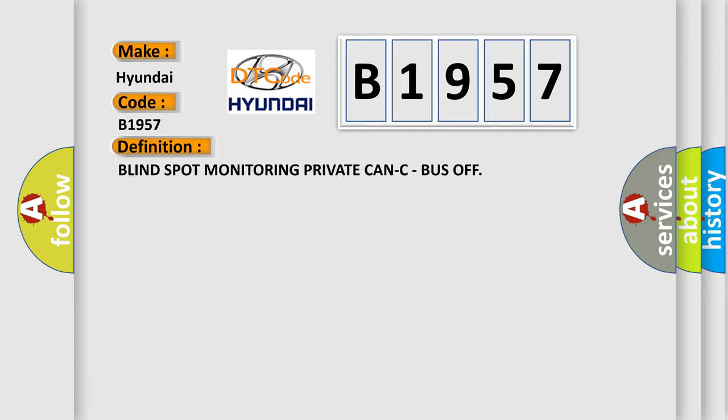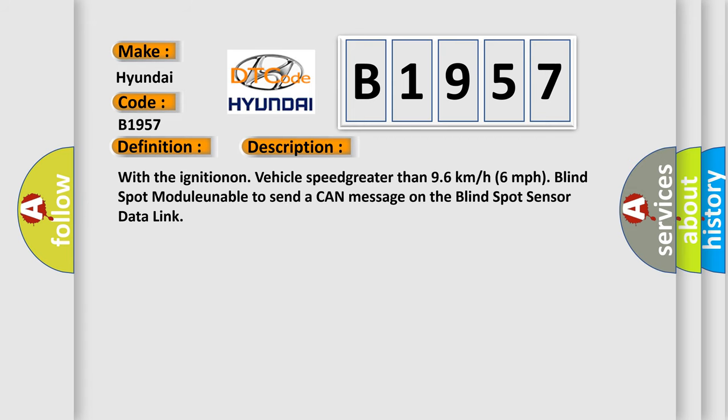The basic definition is: blind spot monitoring private CAN bus off. This is a short description of this DTC code: with the ignition on and vehicle speed greater than 96 km/h, the blind spot module is unable to send a CAN message on the blind spot sensor data link.